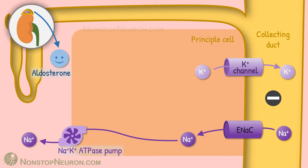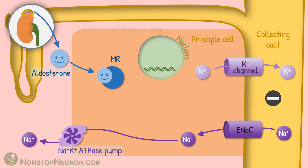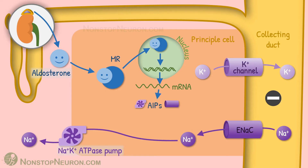Aldosterone is a hormone released from the adrenal cortex. Principal cells have mineralocorticoid receptors in the cytoplasm. Aldosterone binds with this receptor and makes an aldosterone-receptor complex. This complex then goes into the nucleus, where it induces transcription leading to synthesis of mRNAs. These mRNAs are then translated to produce several proteins called aldosterone-induced proteins. They include the sodium potassium ATPase pump and epithelial sodium channels.